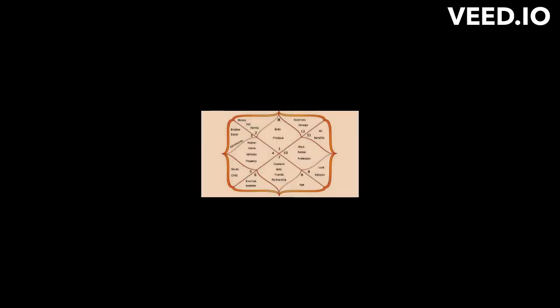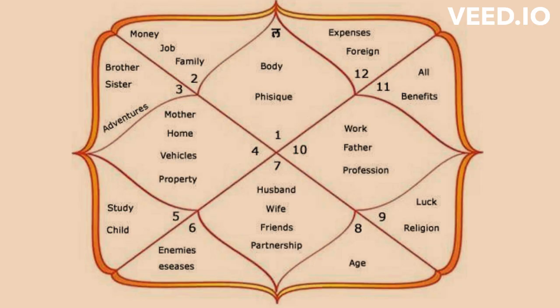In a Lagna chart, we count anticlockwise from the Lagna itself as the first house. The next is second and so forth till the twelfth house.